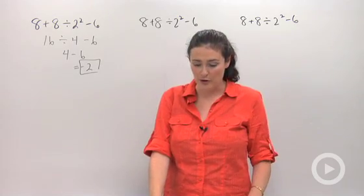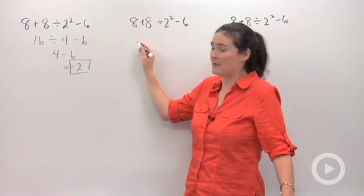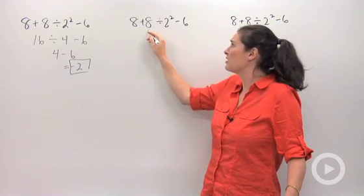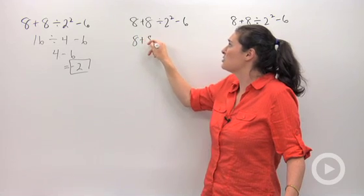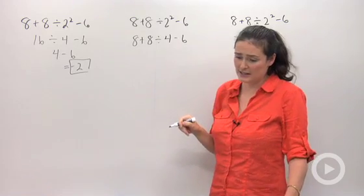Before I tell you about what the order of operations is, let's look at this one. This is the exact same problem, but what if a student came at it like this? They said, okay, 8 plus 8, I'll deal with that later. I'm going to start by doing, I don't know, 2 times itself is 4 and then take away 6.